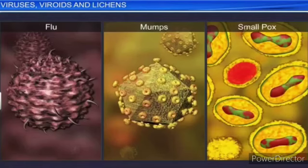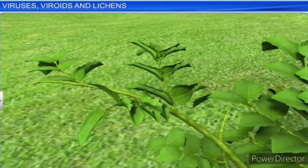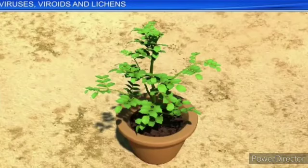Viruses cause diseases like mumps, smallpox, herpes, and influenza. AIDS in humans is also caused by a virus. In plants, symptoms can include mosaic formation, leaf rolling and curling, yellowing, vein clearing, dwarfing, and stunted growth. These are diseases caused by viruses in plants.